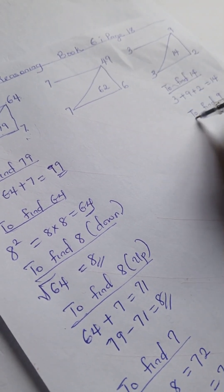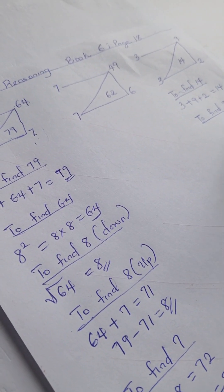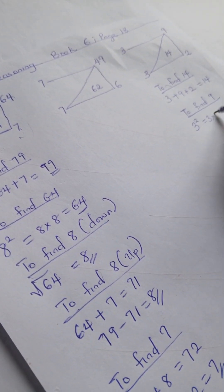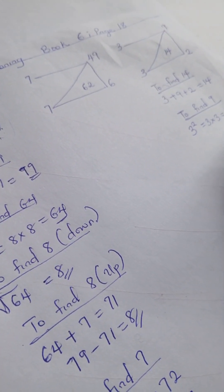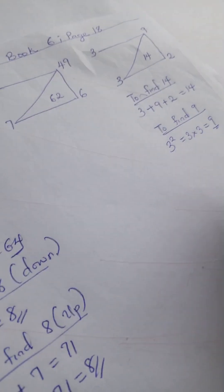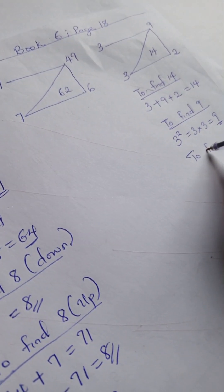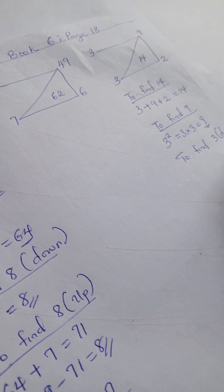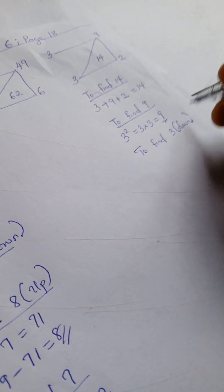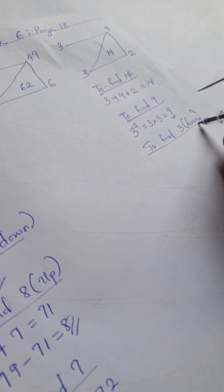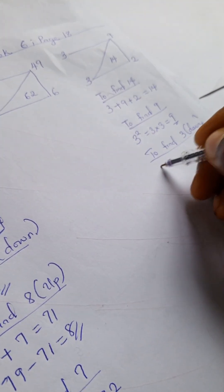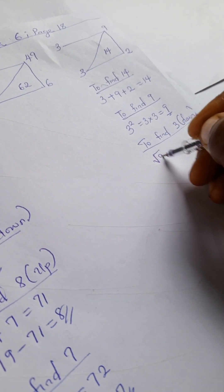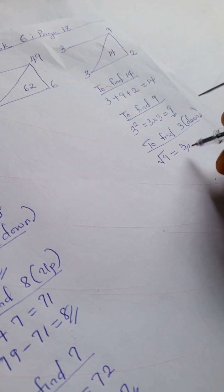To find 9, we're going to have 3 squared, which is 3 times 3, and that gives us 9. To find our 3 down here, we take the square root of 9, which is 3.